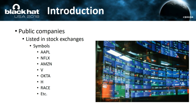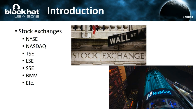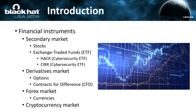A quick introduction: whenever companies want money to develop their projects or to grow, they can go either with private banks or private investors, or they can go public. When they go public, they are recognized by these symbols — Amazon, Apple, Okta, etc. And they flow through different network routers and switches, like stock exchanges, which are in charge of communicating all this trading information. The most famous ones in the US are the New York Stock Exchange and NASDAQ, with other important ones in Tokyo, London, Shanghai, etc.